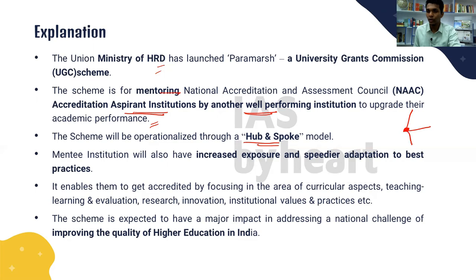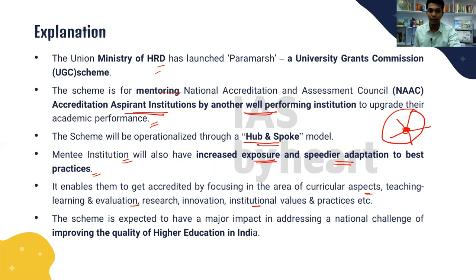In the hub-and-spoke model, a well-performing institution guides an aspirant institution and many others in its vicinity. The mentee institution gains increased exposure and adapts to better practices more quickly. The scheme also helps focus on extracurricular aspects, teacher training, evaluation, innovation, and research. It is expected to have a major impact in addressing and improving the quality of higher education in India.